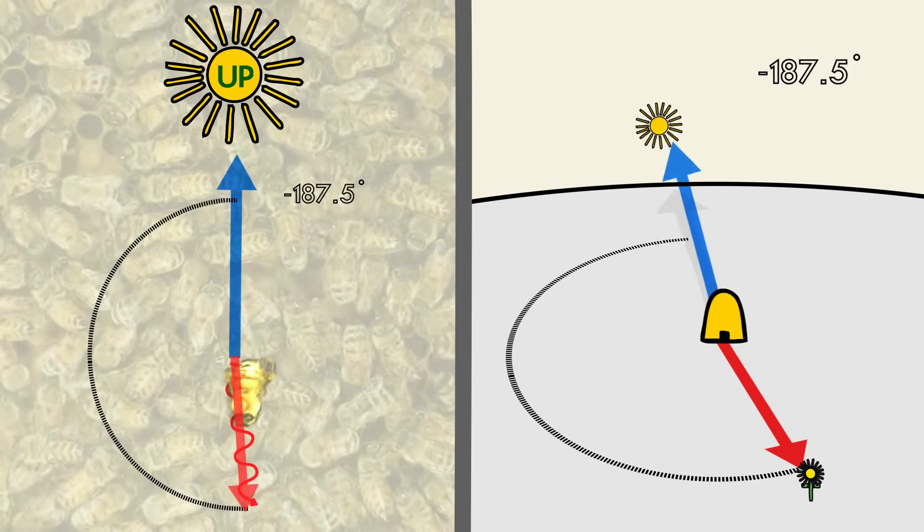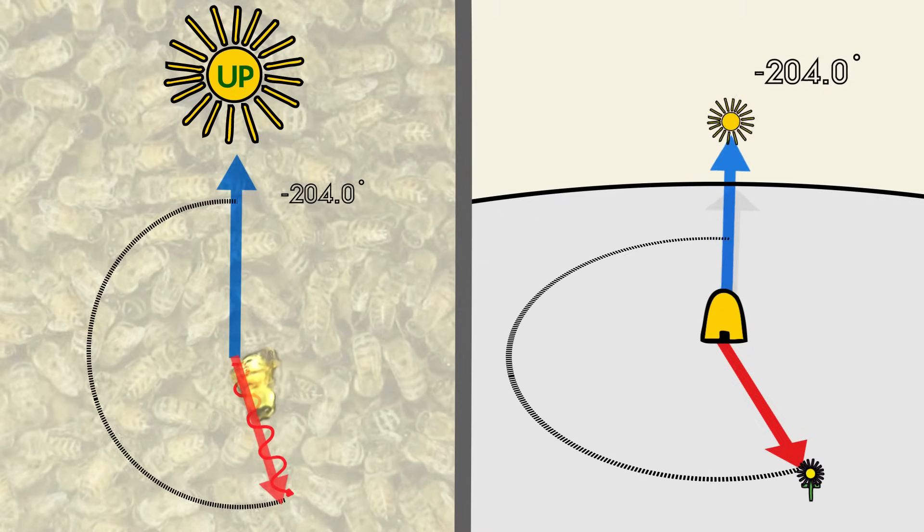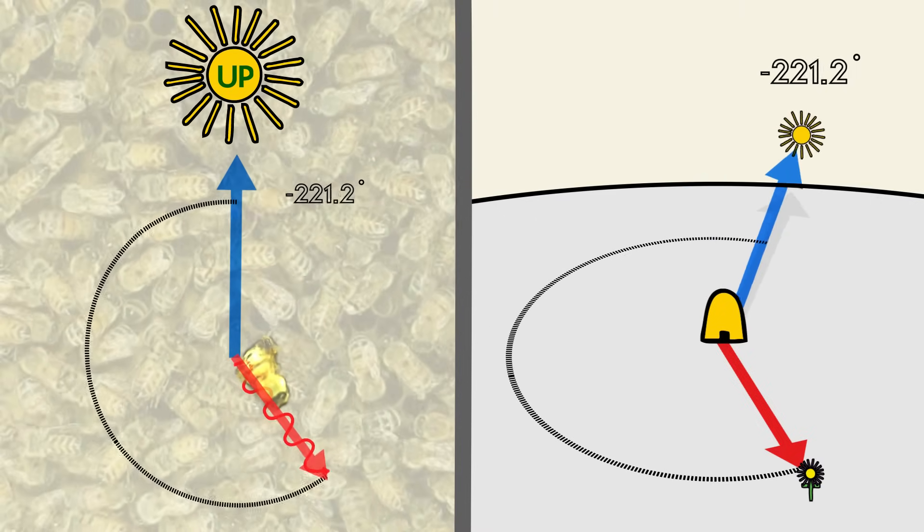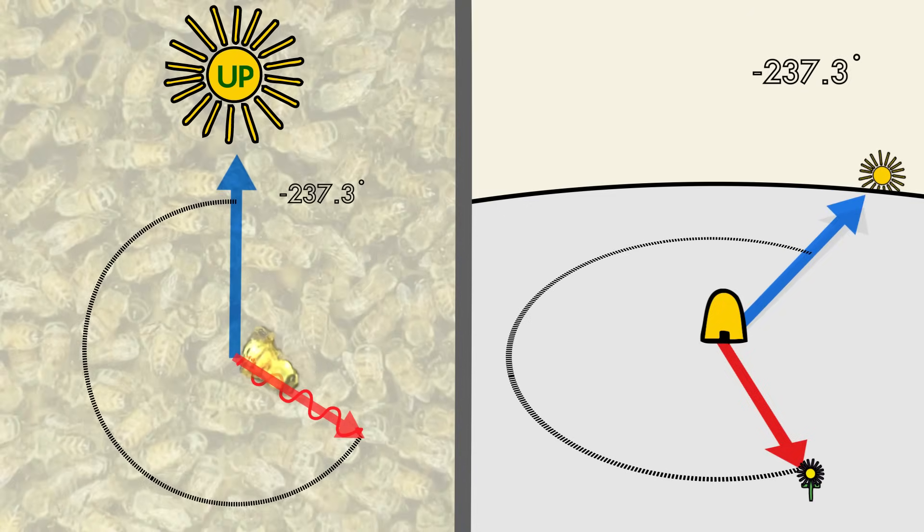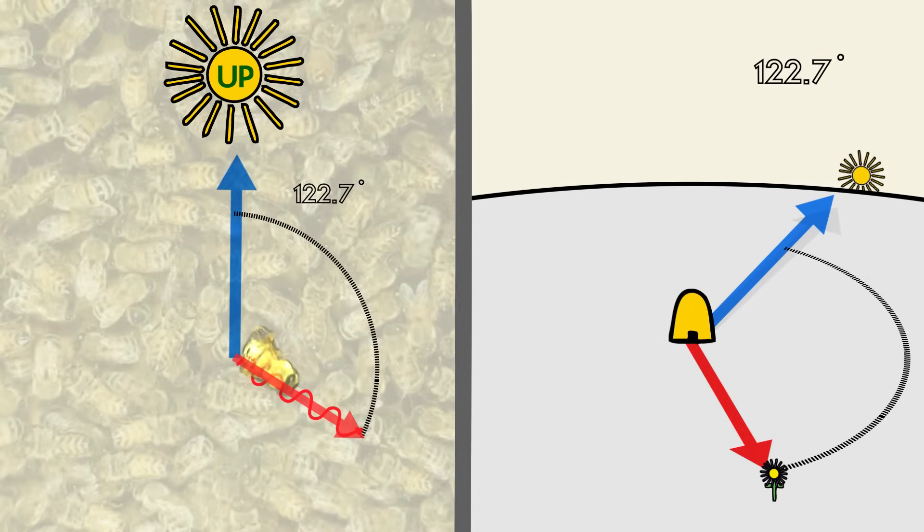As the day goes by, a bee will even use its internal clock to adjust for the movement of the sun in the sky. This lets fellow workers always know the correct direction to travel in order to find food.